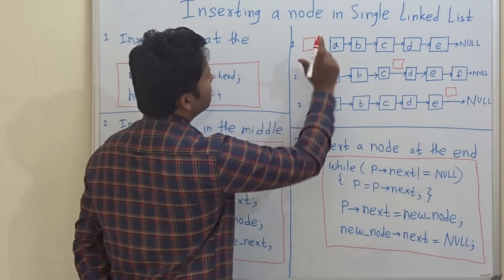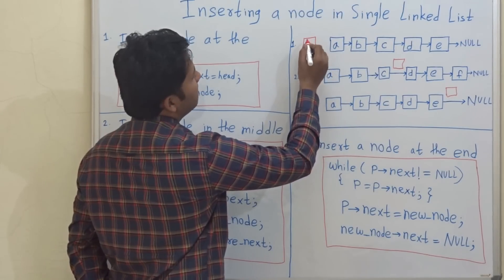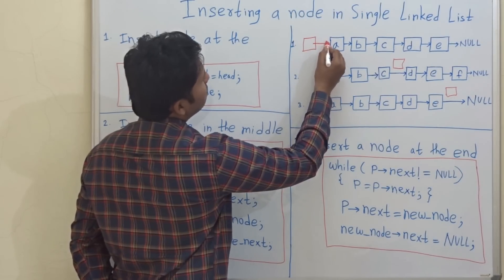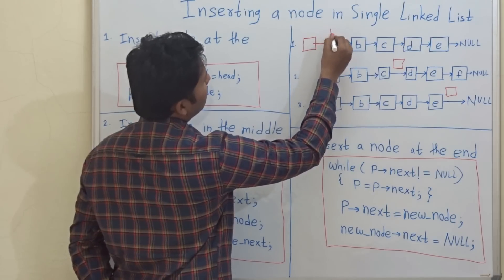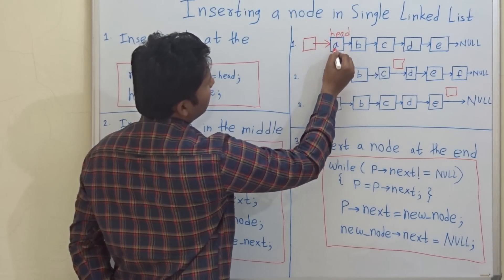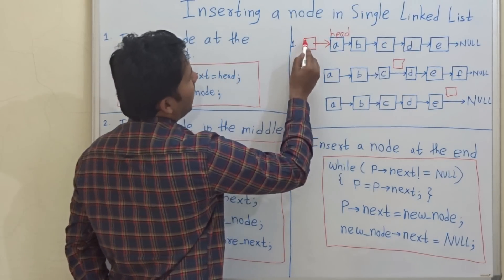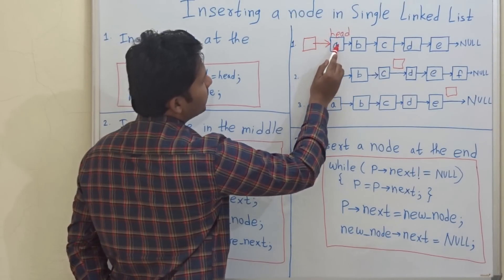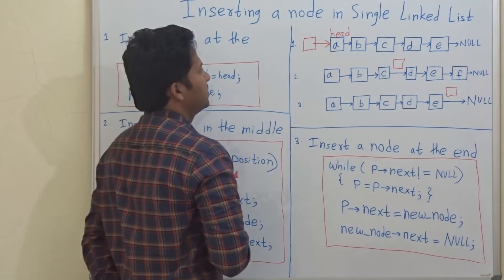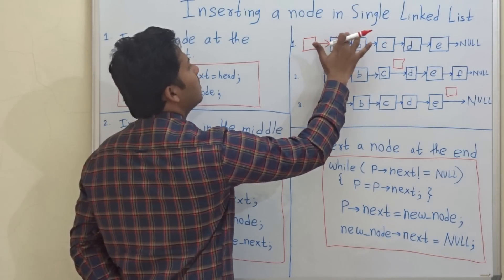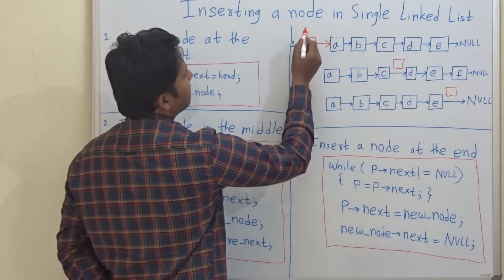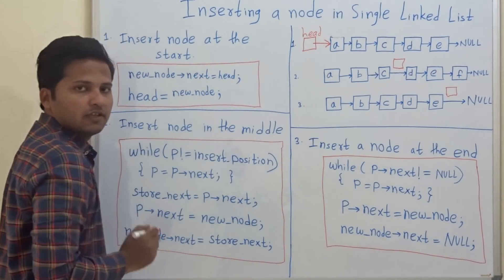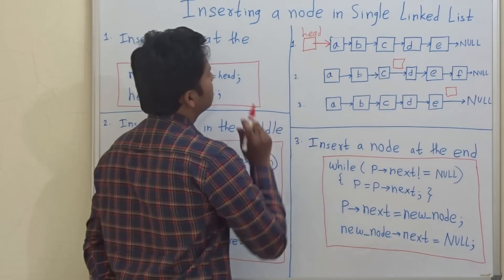If we want to insert the node at the start, then the next pointer of the new node should point to the head of our original linked list. The new node's next pointer points to the head of the original linked list, and now the new node becomes the head node of the linked list. This is how we insert the node at the start.